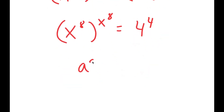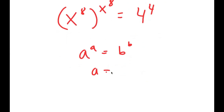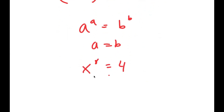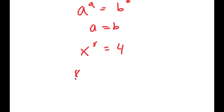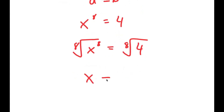Because this is in the form a^a equals b^b, this means a equals b. So x^8 equals 4. Taking the 8th root on both sides, x equals the 8th root of 4.